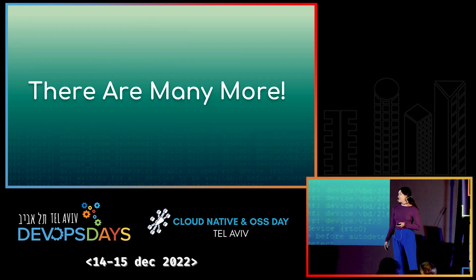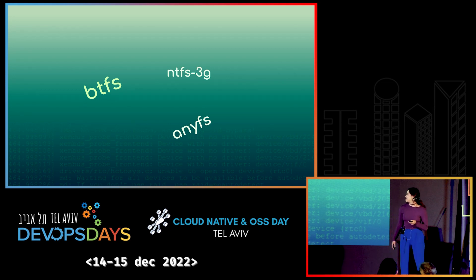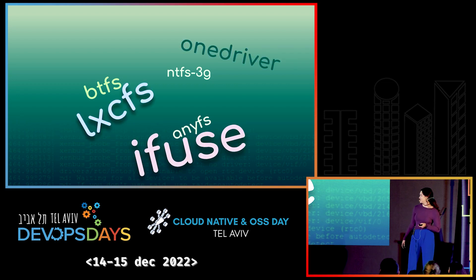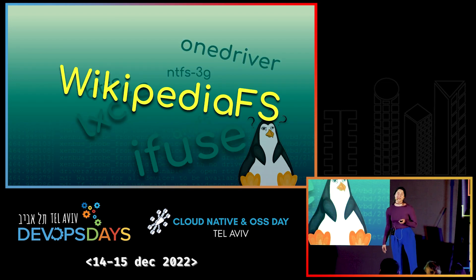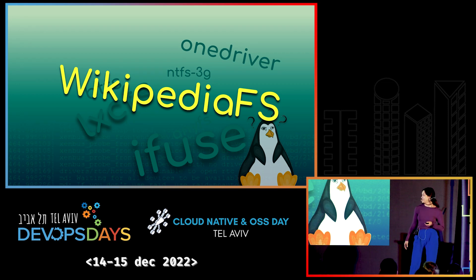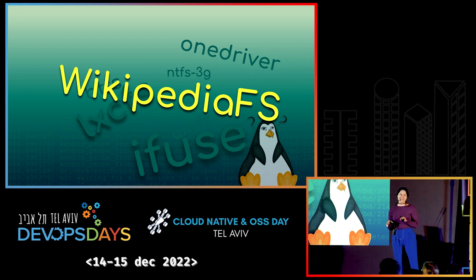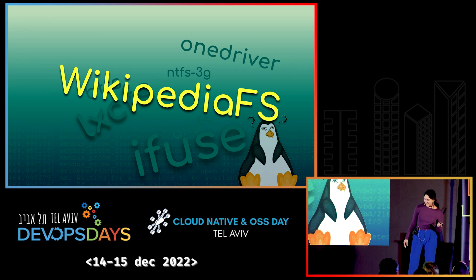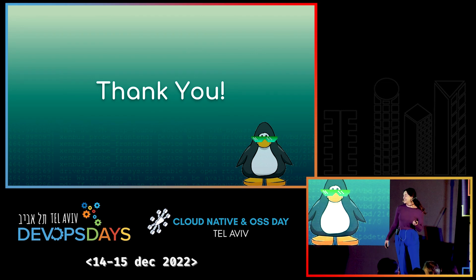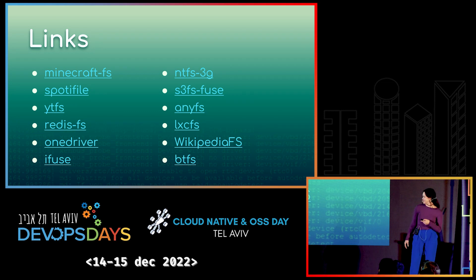And there are many, many more examples: BTFS, NEFS, NTFS 3G for mounting Windows partitions, and many more. There's even WikipediaFS, which I find hilarious — for mounting Wikipedia to your computer and editing articles using Vim. There are links for all of the repos in the last slide if you want to look at them later.